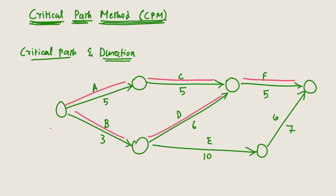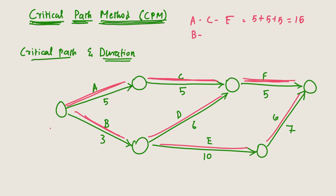The second path is B-D-F, and the third path is B-E-G. For path A-C-F: 5 + 5 + 5 = 15 days. For path B-D-F: 3 + 6 + 5 = 14 days to complete the project.